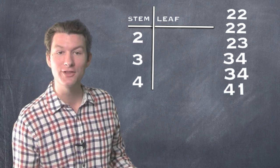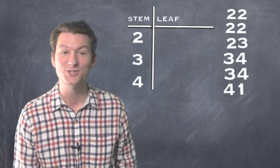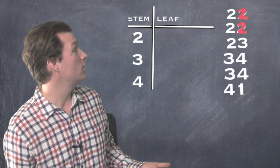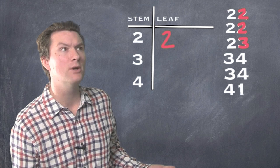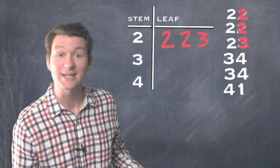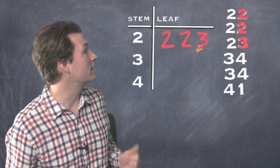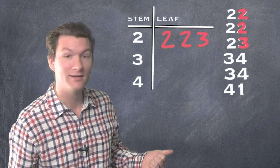Now let's make some leaves, and the leaves are the ones digits. So what are the three leaves we'd make for the 20s? We've got 22, 22, and 23. So the three ones digits are 2, 2, and 3. That's what you'd write next to the 2. So we've got 22, 22, and 23. You see how this works?